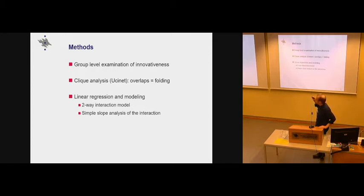And the N is like around 150 people, but what we actually analyze is 280 cliques of 104 employees. And innovativeness is measured at the group level. In this case, we basically aggregate the individual measures. Cliques were identified with clique overlap analysis or with UCInet clique analysis. And then we check for their overlaps. If cliques have a lot of overlaps in our analysis, that means that they have a lot of structural folds. The actual analysis was just a linear regression. And we did a two-way interaction model and a simple slope analysis of the interaction as well.